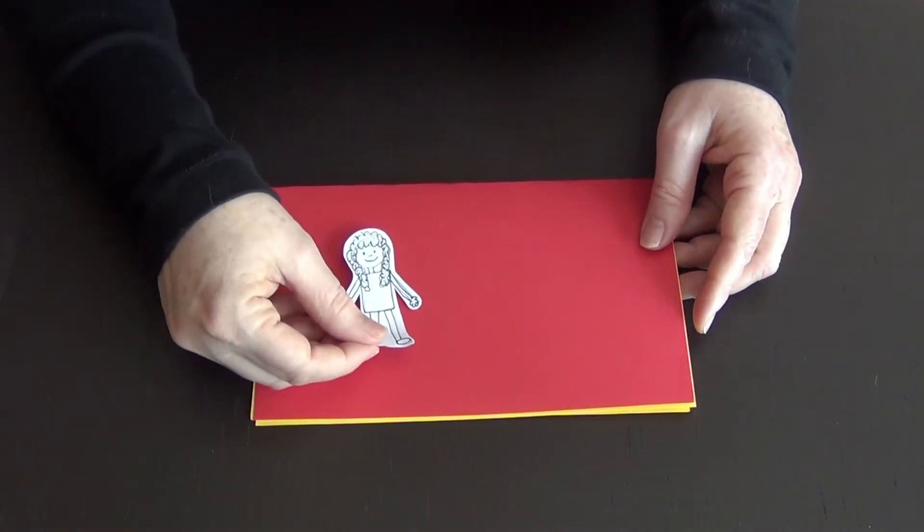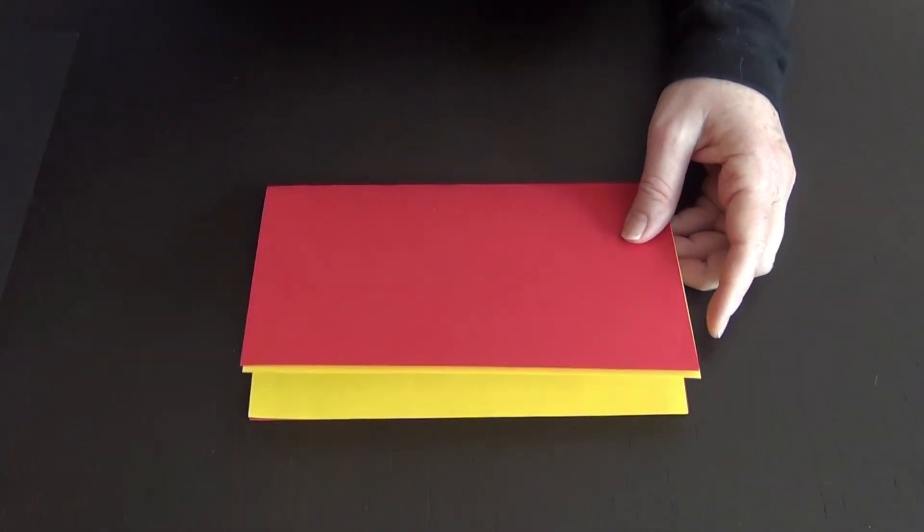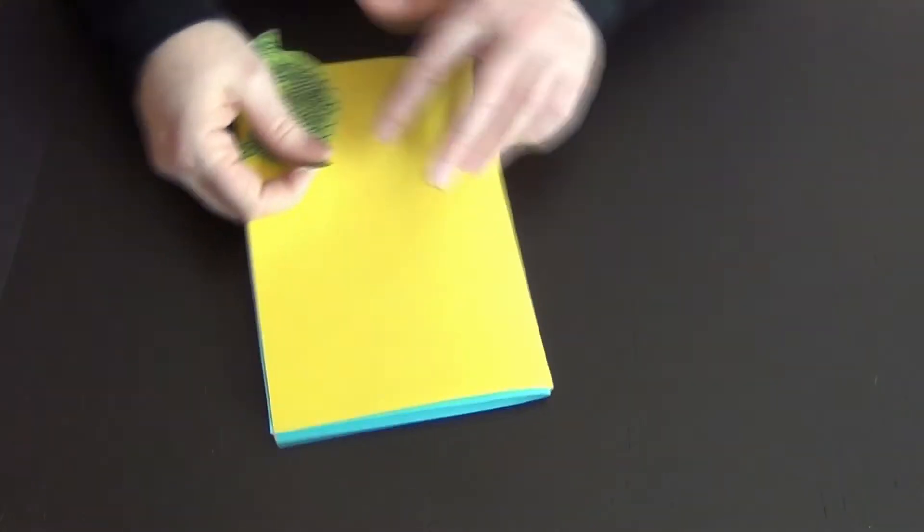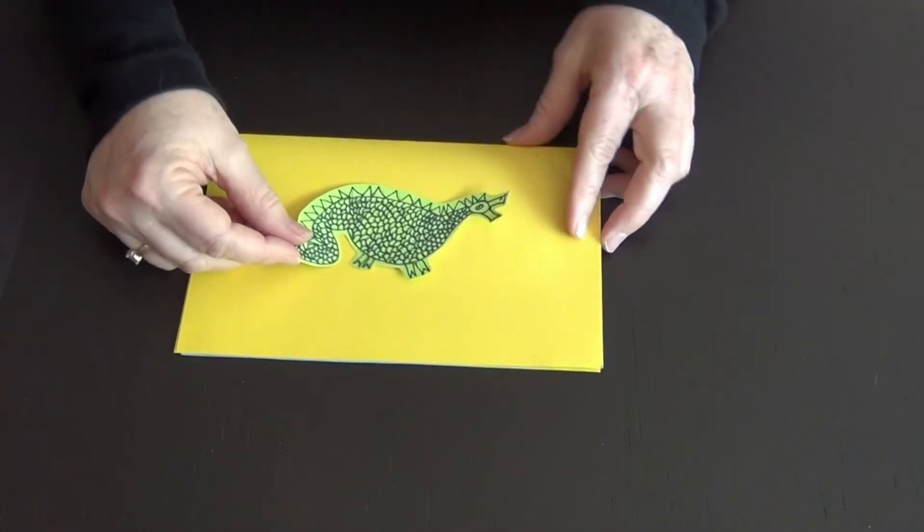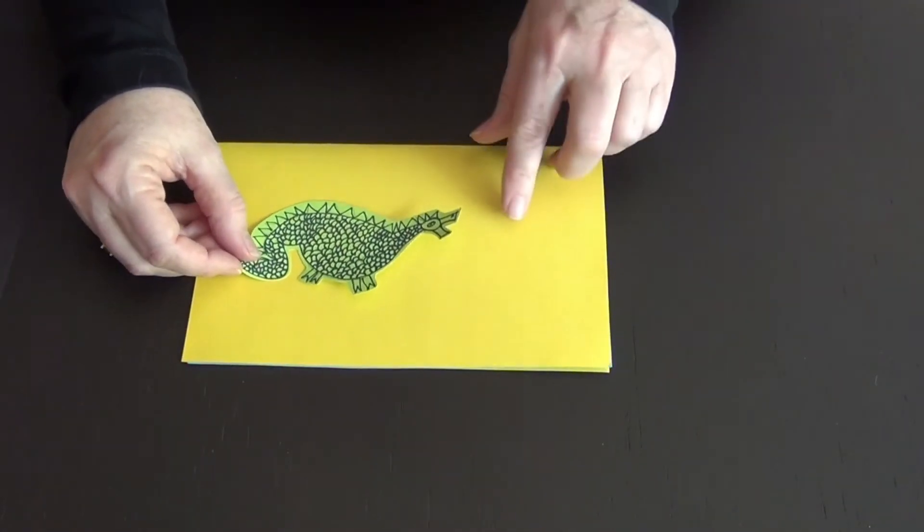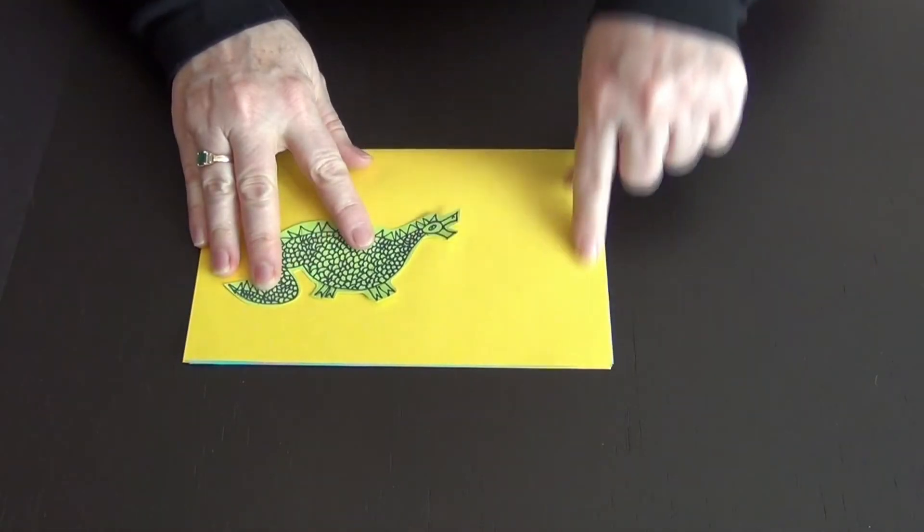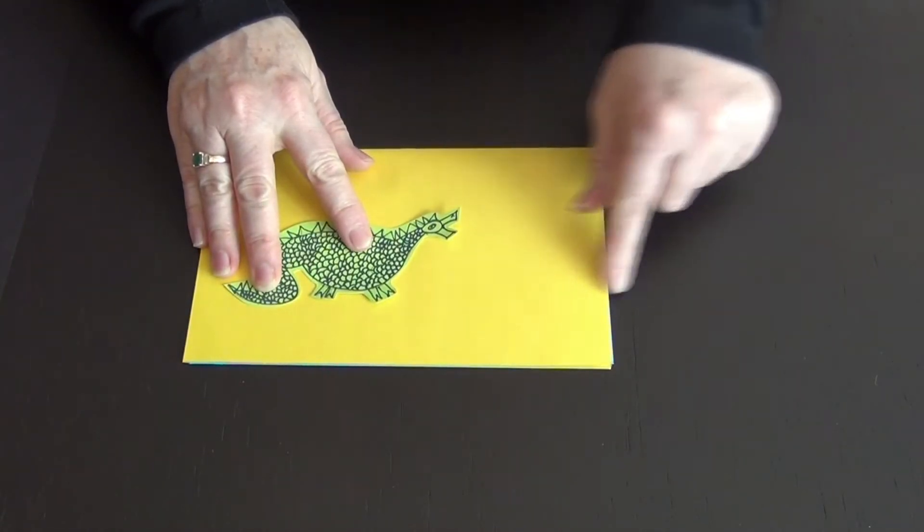The other way you can do this dragon pop-up card is to put the dragon on the outside. Let me set this card to the side here. Take a dragon that you've made and put it on the outside. And maybe the dragon is breathing flames. And inside the flames, you put your message there.